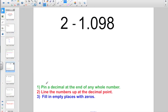Now that we know the three steps: pin a decimal point at the end of any whole number, line up the numbers at the decimal point, and fill in empty places with zeros, let's get ready to actually subtract.